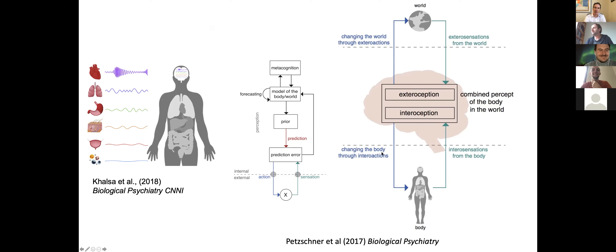Interoception is one general category of sensory processing — you of course have the canonical exteroceptive senses as well. We don't necessarily have a subjective experience of interoception and exteroception as being distinct; we just experience what we experience, and at certain times some signals seem more salient than others. One exception might be sleep, but even in sleep there are substantial changes in physiology — heart rate, blood pressure, muscle tone — and of course there are dreams and a whole variety of subjective phenomena.